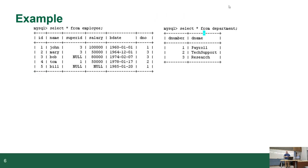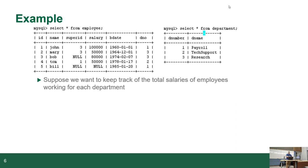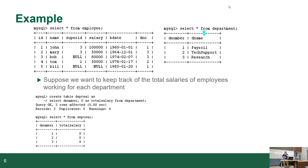We have two example tables — one has department, one has employees. Suppose we want to keep track of the total salaries of employees in each department. We create a table that includes the department number and the total salary from the department; right now the total salary is zero. Essentially we created a placeholder table.